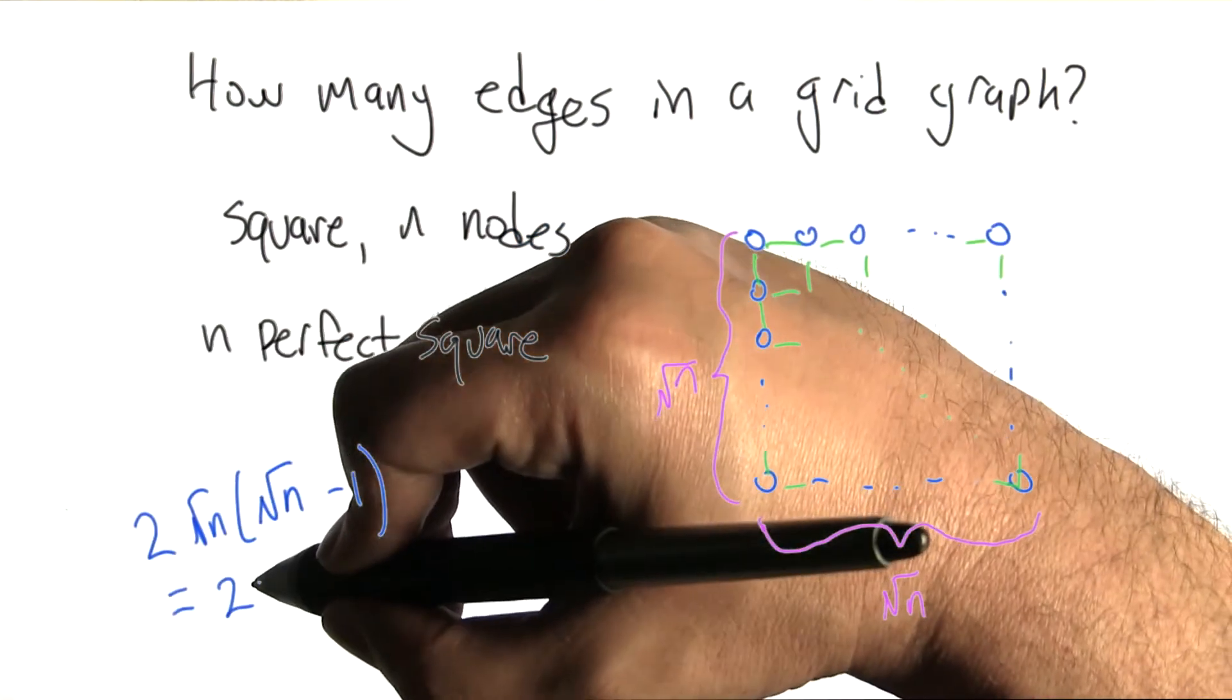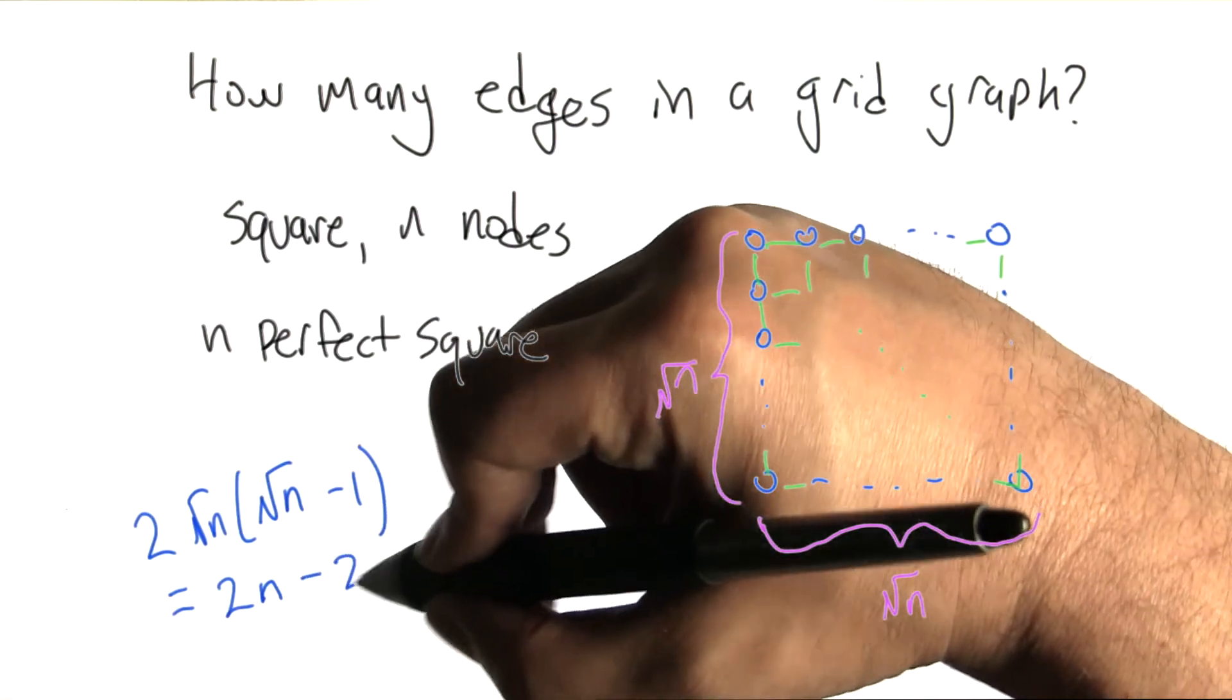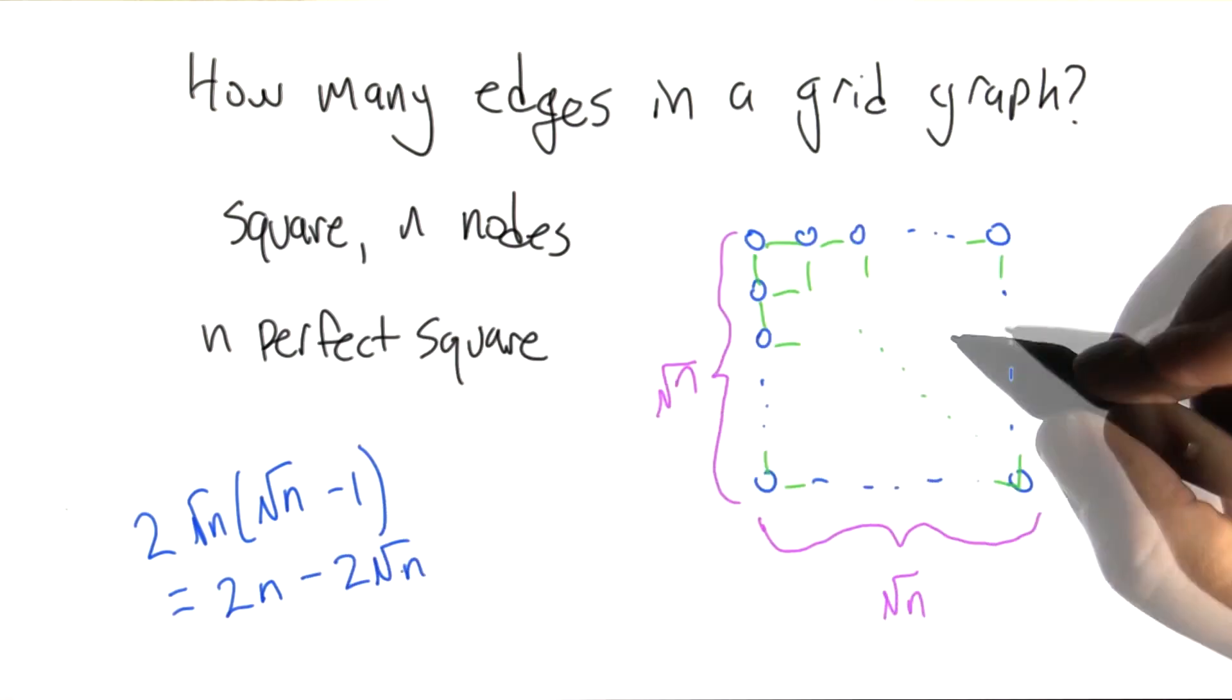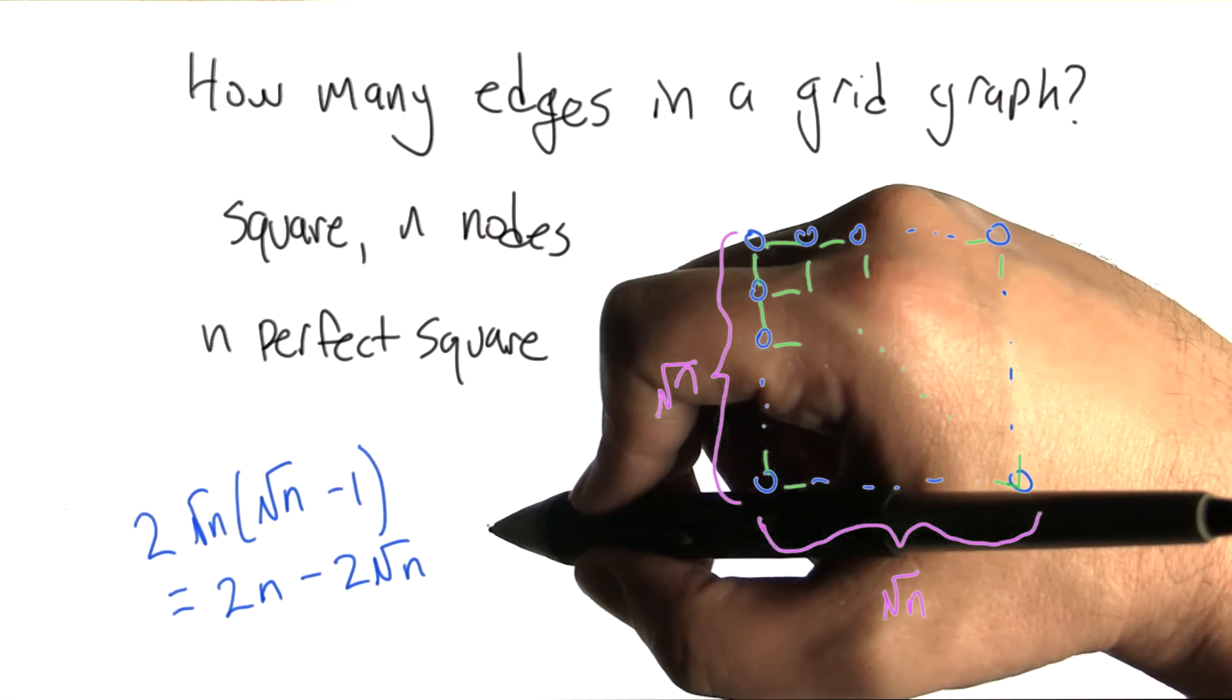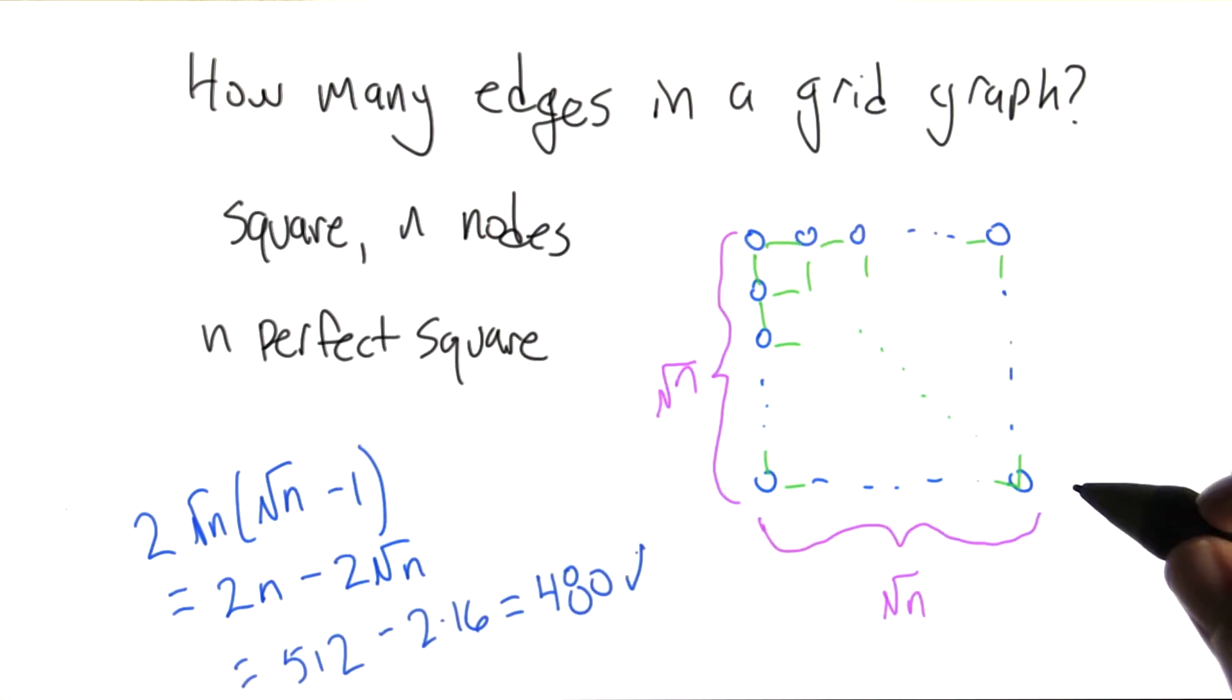So what is that? That's 2n minus 2 root n. And does that give us the right answer when n is 256? Yes. Well, that's good.